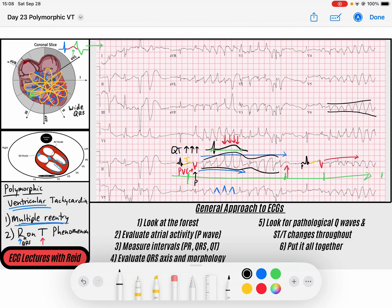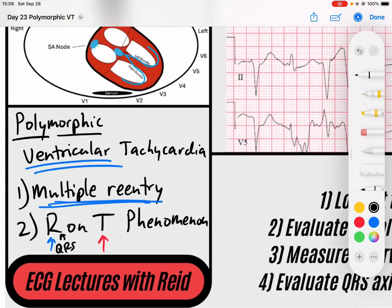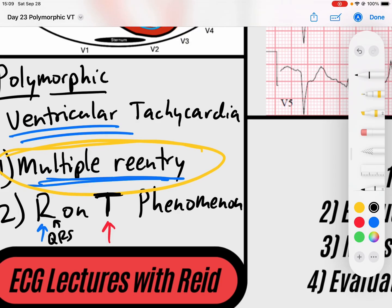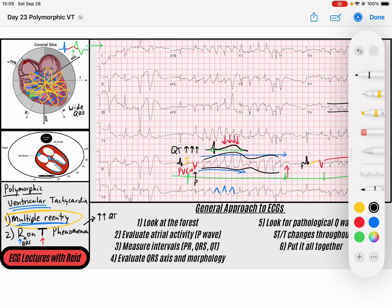So polymorphic VTAC can be confusing, but there are really two mechanisms to focus on. First, multiple reentry pathways — this occurs when there are multiple areas of scarring within the ventricular myocardium. These patients tend to be older with vascular risk factors like diabetes, hypertension, and hyperlipidemia, with multiple areas of scarring due to chronic ischemia or previous myocardial infarctions. The R on T phenomenon can also occur in this demographic, but there are many more scenarios — anybody with a long QT interval is at risk. We monitor QT intervals because PVCs in the setting of a long QT can cause R on T leading to polymorphic VTAC.